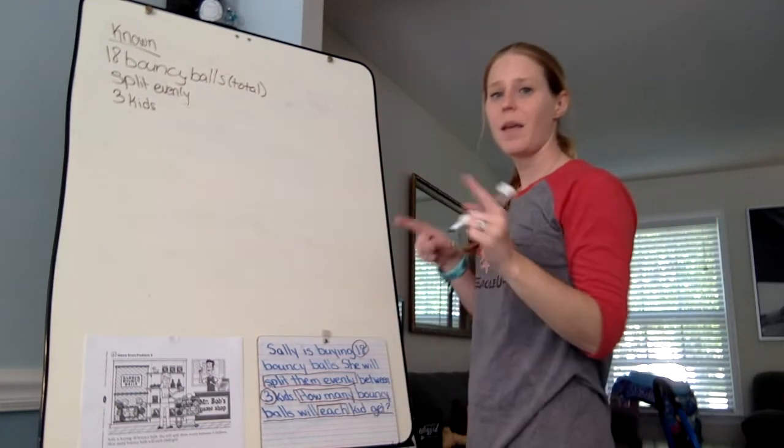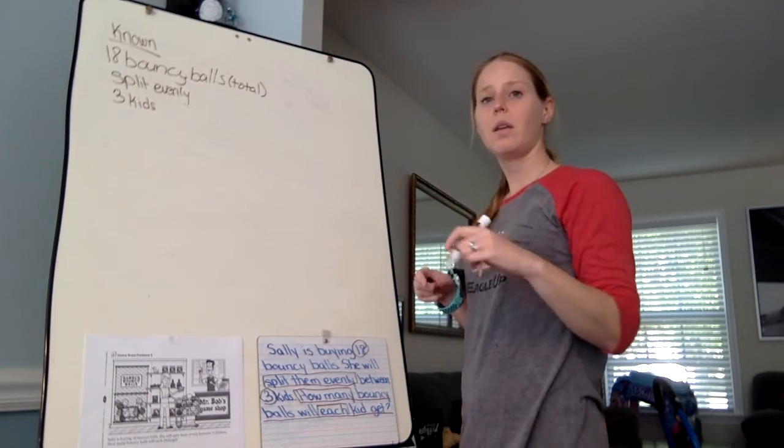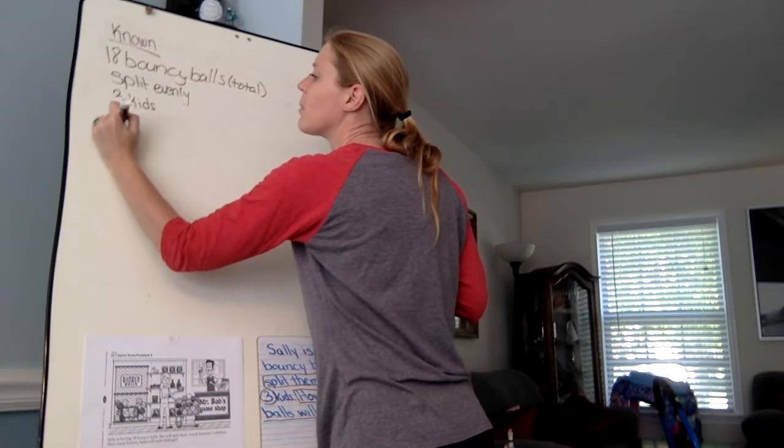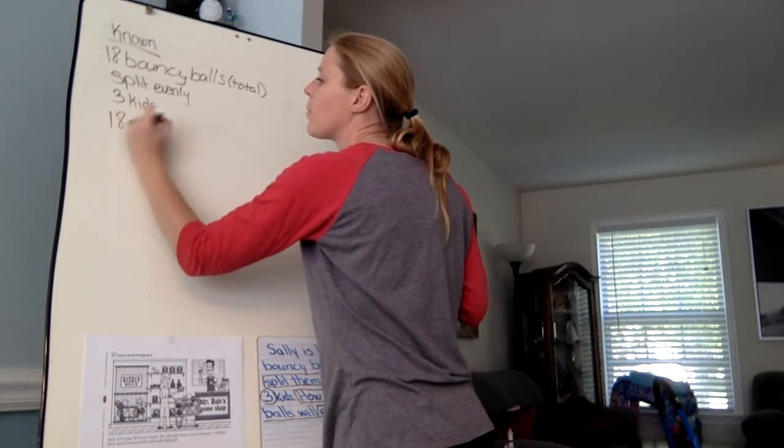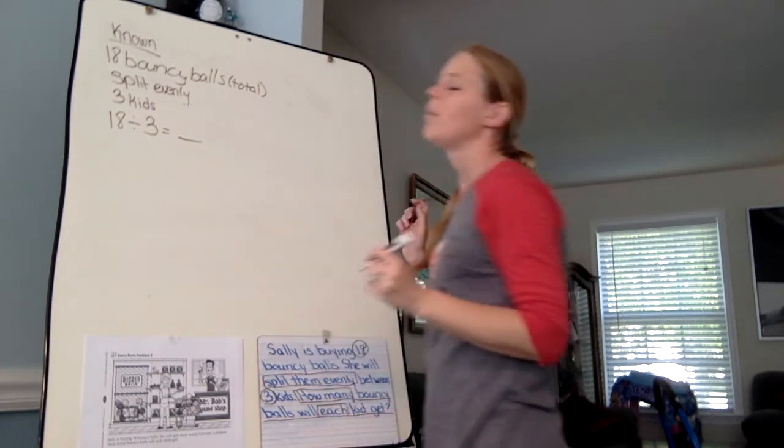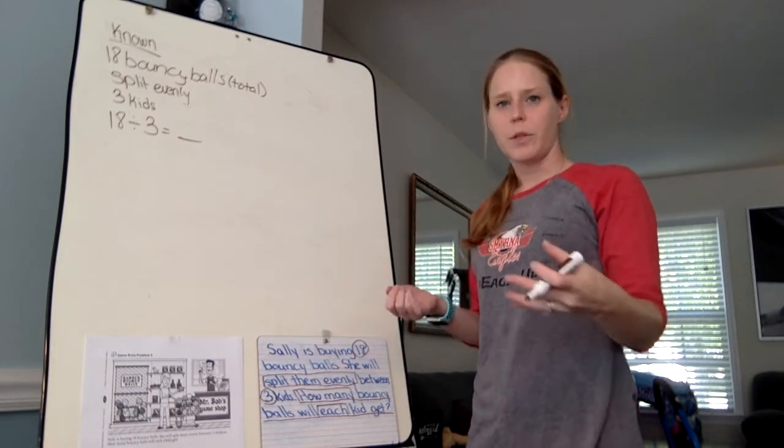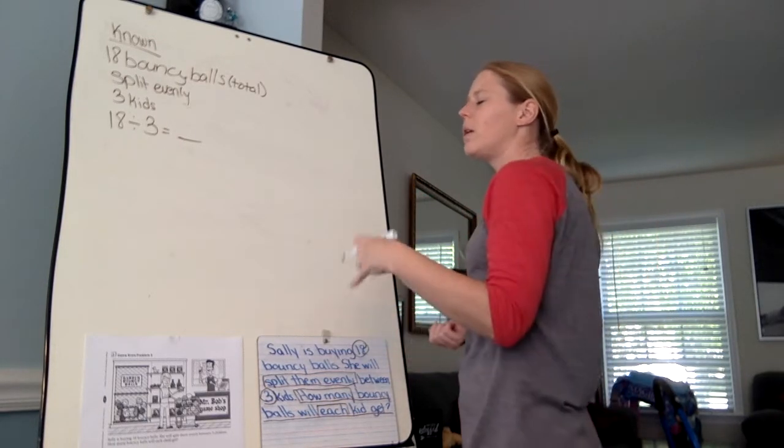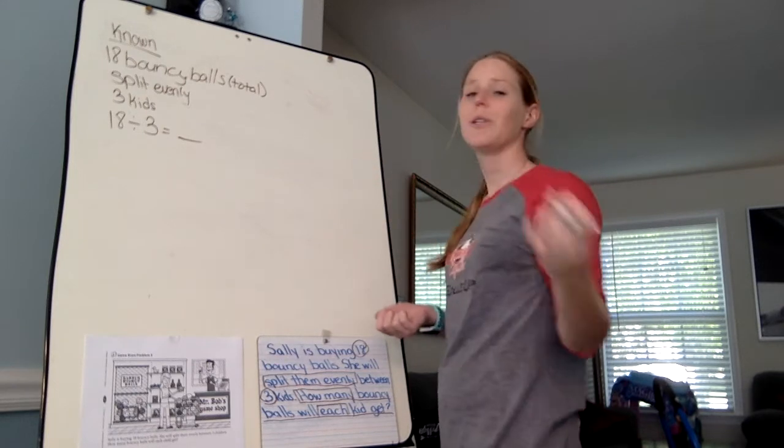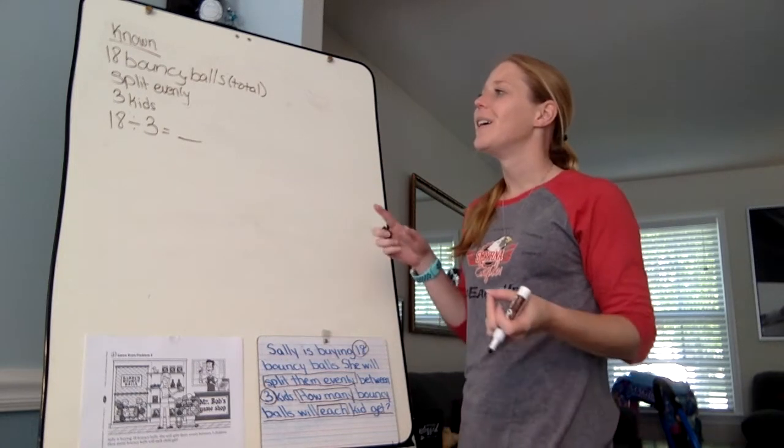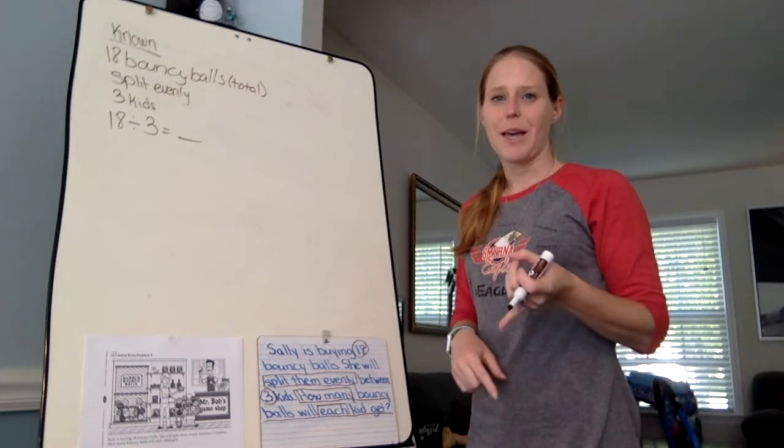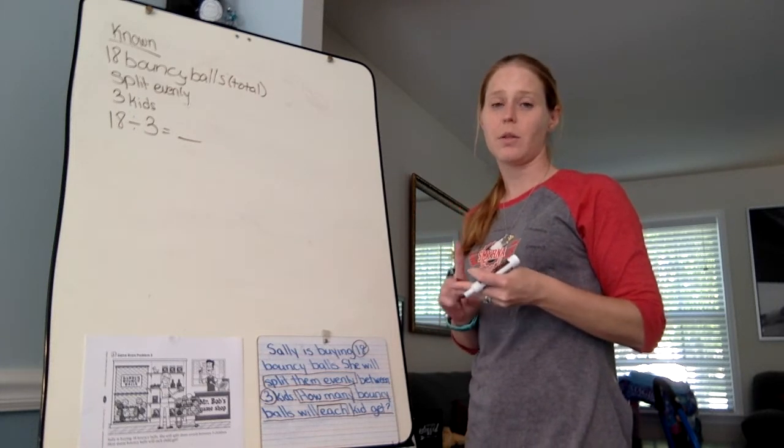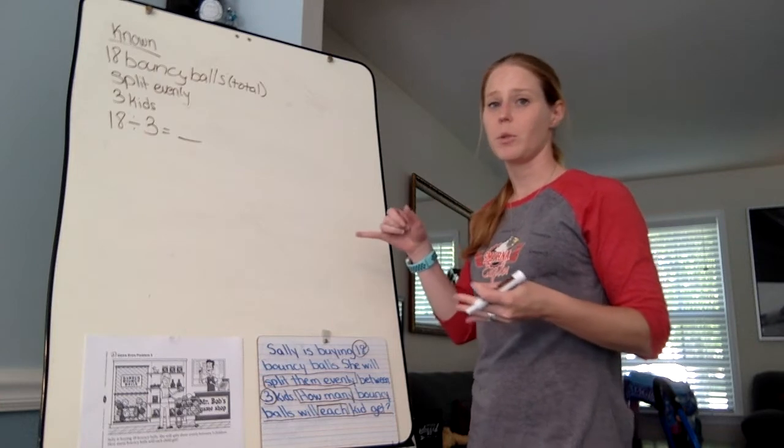So my equation is going to be 18 divided by 3 equals something. But if we're not quite comfortable with division yet, I can also write this as a multiplication equation. I know how many groups I have, I just don't know how many go in each group. But I do know how many my total is. So I can use that information in multiplication. So I can say 3 times something equals 18.